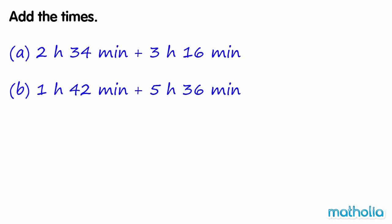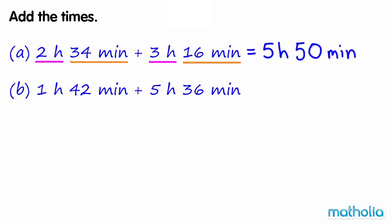Add the times. Let's add 2 hours 34 minutes and 3 hours 16 minutes. Start by adding the hours: 2 hours plus 3 hours equals 5 hours. Next, add the minutes: 34 minutes plus 16 minutes equals 50 minutes. So 2 hours 34 minutes plus 3 hours 16 minutes equals 5 hours 50 minutes.